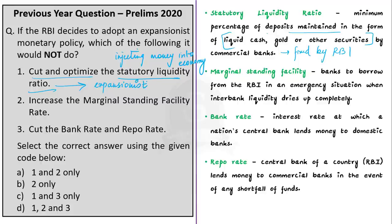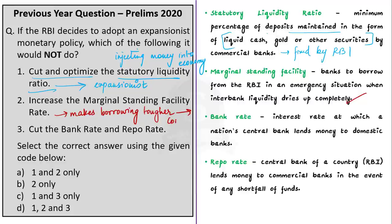The second option is regarding the Marginal Standing Facility rate. The MSF is a window for banks to borrow from the Reserve Bank of India in an emergency situation when bank liquidity dries up completely. If the MSF rate is increased, it makes borrowing tougher. Since expansionist policy means increased lending, an increase in the MSF rate is actually a contractionary monetary policy — the opposite of expansionist.